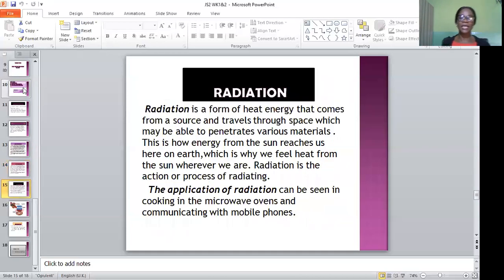Thirdly, it is what is known as radiation. What is radiation? Radiation is a form of heat energy that comes from a source and travels through space which may be able to penetrate into various materials. This is how energy from the sun reaches us here on earth. That is why we feel heat in the sun wherever we are. Radiation is the action or process of radiating.